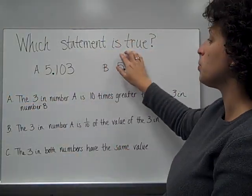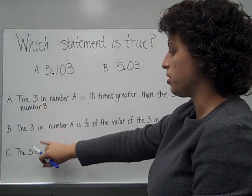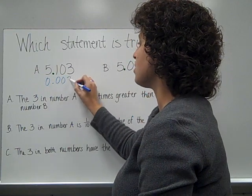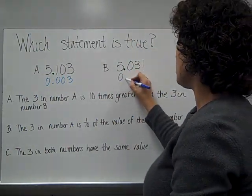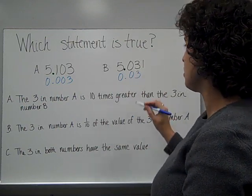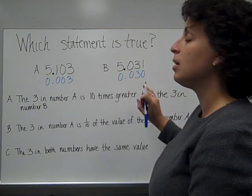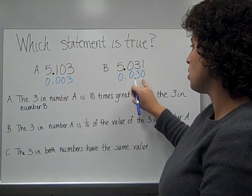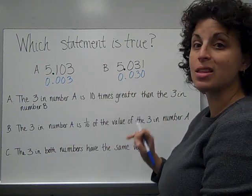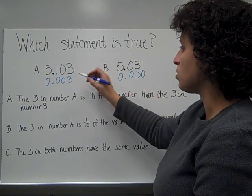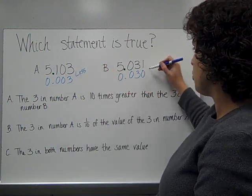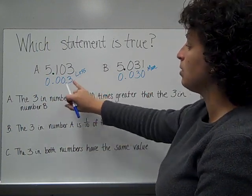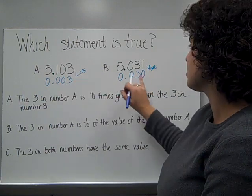We're going to use place value to help us decide which of these statements is true. I noticed that each one starts with the three. I'm going to look at the threes: this three is in the thousandths place, and this three is in the hundredths place. I'm going to fill in the zero afterwards since that three wasn't there. So I've got three thousandths compared to thirty thousandths. Three thousandths is less, and thirty thousandths is more.